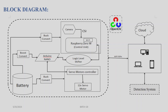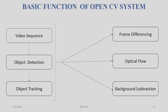We are using OpenCV at the source to detect face, serial recognition, and track the object. This is the flowchart of the basic function of the OpenCV system. First, the video sequence goes to object detection and object tracking. Both are directly connected to frame differencing, obstacle following, and background subtraction.